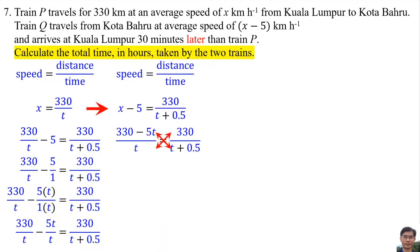Then do cross multiplication. 330 times T equals 330T. 330 times 0.5 equals 165. Negative 5T times T equals negative 5T squared. Negative 5T times 0.5 equals negative 2.5T.